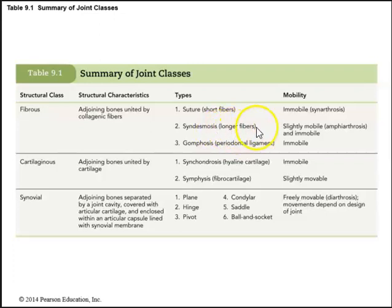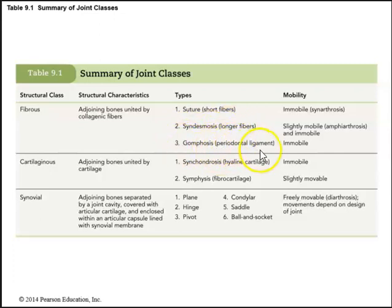Syndesmoses have longer fibers and are slightly movable joints — also known as amphiarthroses. Some syndesmoses are also classified as synarthroses. Gomphoses are found in the periodontal ligaments of the teeth — the ligaments that hold your teeth down into their sockets — and these are immobile or synarthroses type joints based on function.